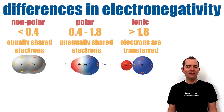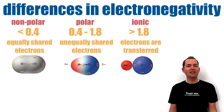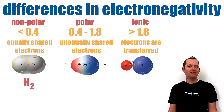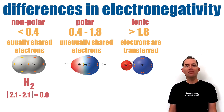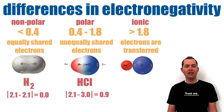Ionic bonds are typically formed between metals and non-metals. Looking at the absolute value of the electronegativity difference between atoms in a few compounds, we can see how electronegativity predicts bond type. Hydrogen and hydrogen have equal electronegativity, so their difference is zero, meaning they equally share electrons and form a nonpolar covalent bond.